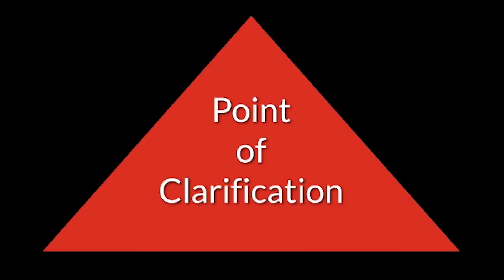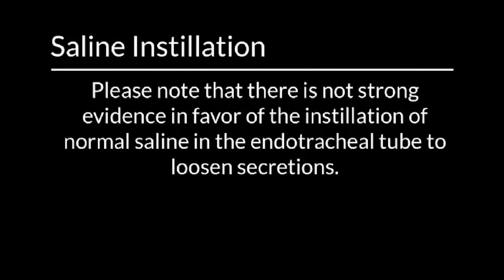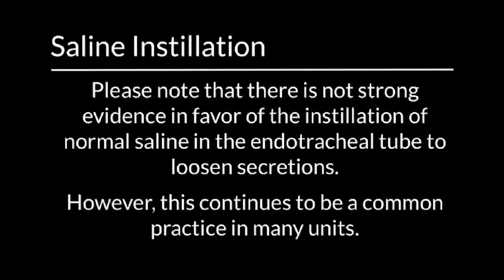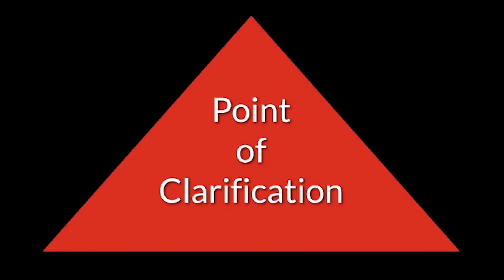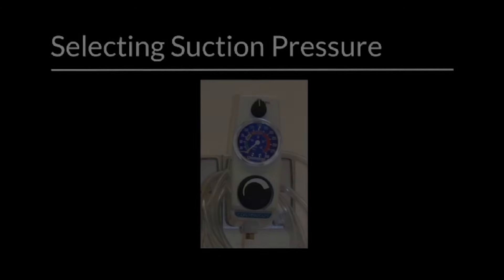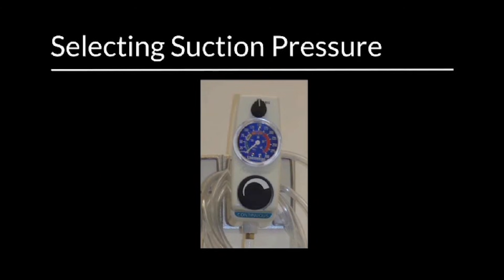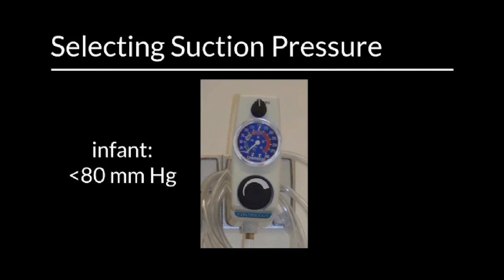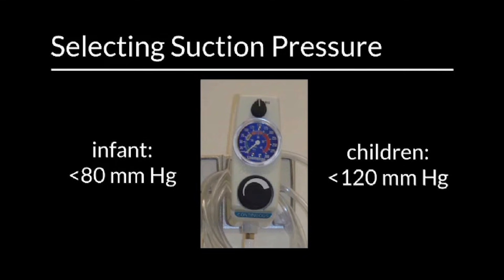Point of clarification: Saline instillation. Please note that there is not strong evidence in favor of the instillation of normal saline in the endotracheal tube to loosen secretions; however, this continues to be a common practice in many units. An additional consideration is the amount of suction used for the process. In an infant, it is recommended that you use no more than 80 millimeters of mercury. For older patients, you may use 120 millimeters of mercury for suctioning.